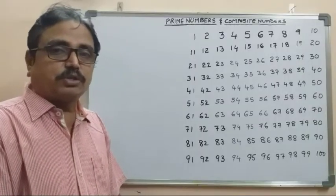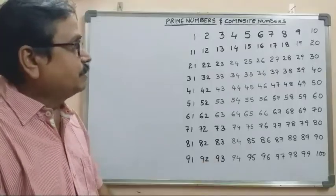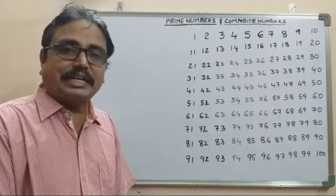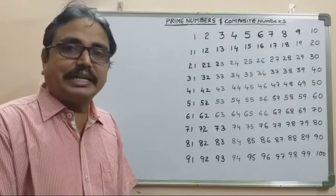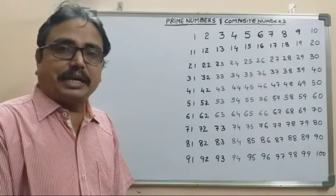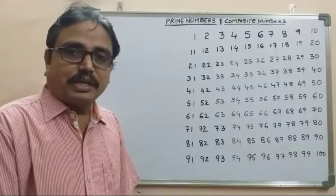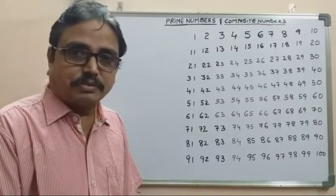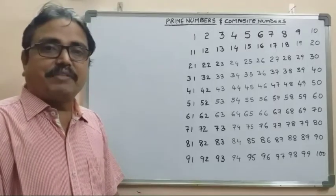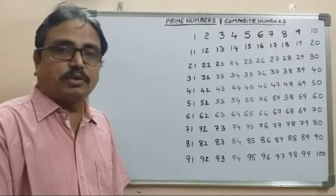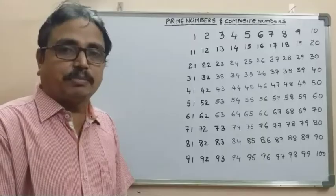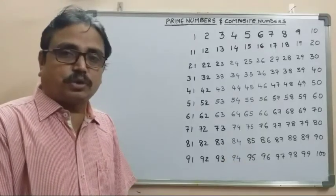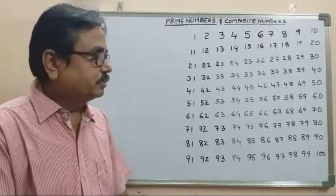A number having exactly two factors — one and itself — is a prime number. A number having more than two factors is a composite number.